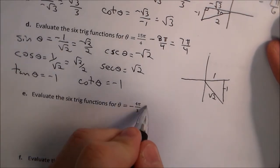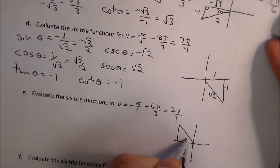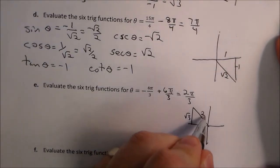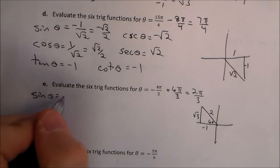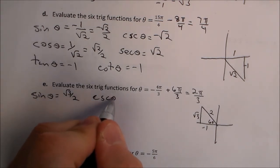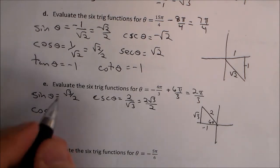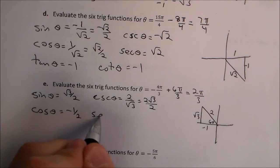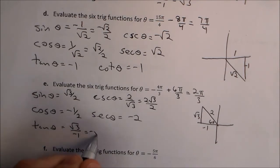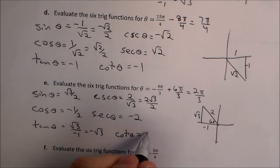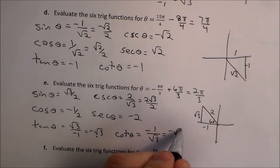For negative 4π over 3, add 6π over 3 to get the coterminal angle 2π over 3. That's in quadrant two with a 60 degree reference angle, giving sides root 3, 2, and 1 with the x-value negative. Sine of theta is root 3 over 2, cosecant is 2 root 3 over 3. Cosine is negative 1 half, secant is negative 2. Tangent is root 3 over negative 1, which is negative root 3, and cotangent is negative 1 over root 3, or negative root 3 over 3.